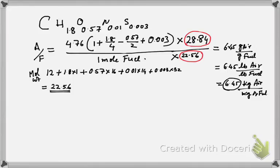This 6.45 is the ratio. So for every unit mass of fuel, you need 6.45 units of air. So that's how we determine air to fuel ratio. I hope now this is clear.